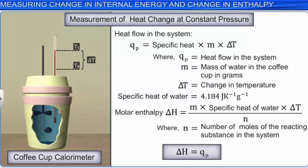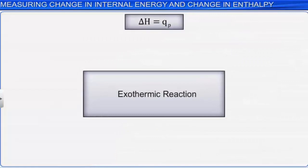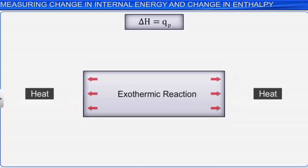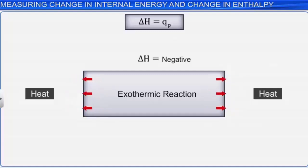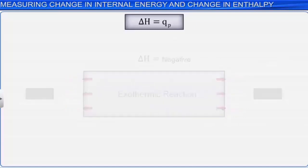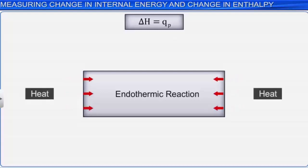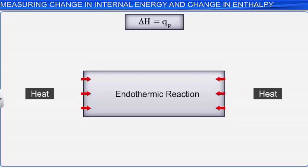When heat is absorbed or evolved by the system at constant pressure, we are measuring changes in enthalpy. Therefore, delta H = qp. In an exothermic reaction, heat is evolved and the system loses heat to the surroundings, so qp and delta H are negative. Similarly, for an endothermic reaction, heat is absorbed by the system from the surroundings, and therefore qp and delta H will be positive.